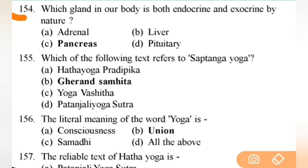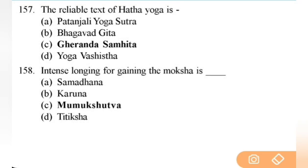This question is also important — how pancreas functions as exocrine and endocrine. Next: which of the following text refers to Saptanga Yoga? Right answer is B — Gherand Samhita — seven limbs of yoga. Next: the literal meaning of the word Yoga is union. Next: the reliable text of Hatha Yoga is — right answer is C — Gherand Samhita.